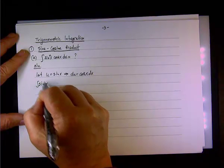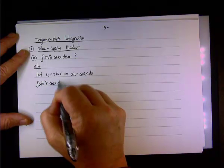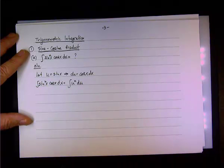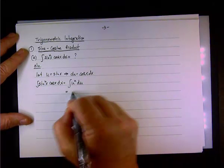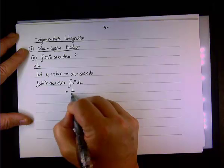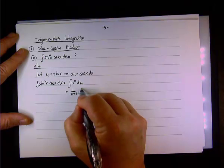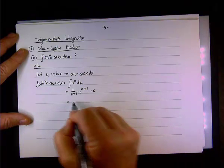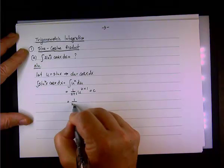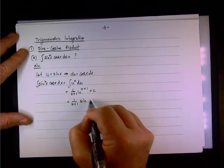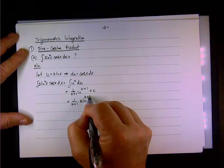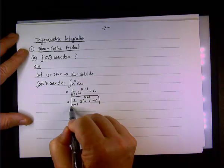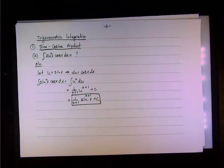If this is the case, then the integral of sine x to the nth power times cosine x dx becomes the integral of u to the power of n du. That's easy. And that integral is 1 over n plus 1 times u to the n plus 1, plus c. Then we substitute back and end up with 1 over n plus 1 times sine x to the n plus 1, plus c. So this is the answer for this particular example.